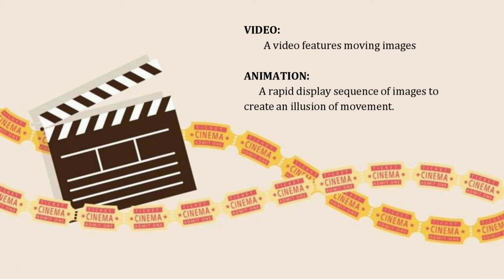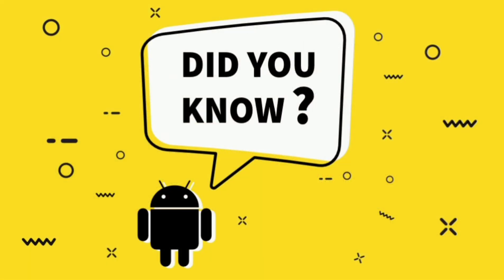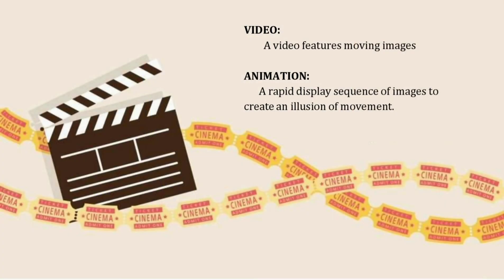Video features moving images with or without audio that is recorded and saved digitally. Interestingly, a study says that 79 percent of people choose to watch a video to learn about content rather than read text on a page. Animation is the art of making inanimate objects appear to move — in other words, it is the rapid display of images to create an illusion of movement.